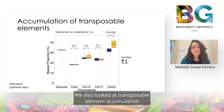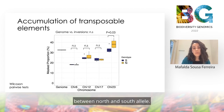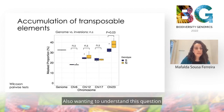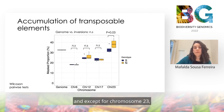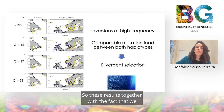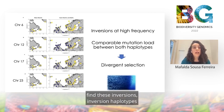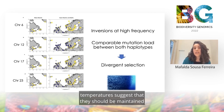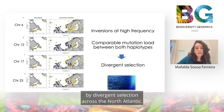We also looked at transposable element accumulation between the North and South alleles, also to understand mutational load accumulation. Except for chromosome 23, we find no significant differences between the haplotypes. These results, together with the fact that we find these inversion haplotypes at high frequencies across the gradient of seawater temperature, suggest that they should be maintained by divergent selection across the North Atlantic.